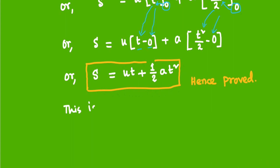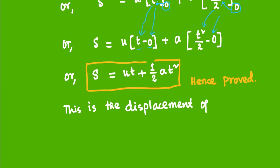This is the displacement of the body in time t — s equals ut plus half at squared represents the displacement of the body.